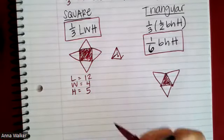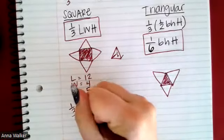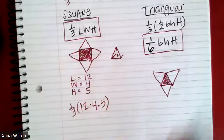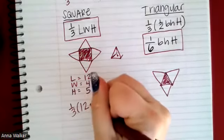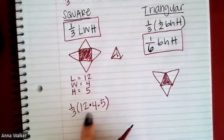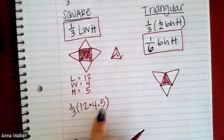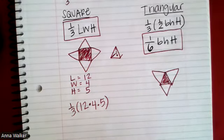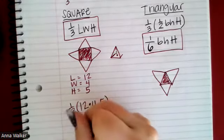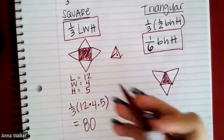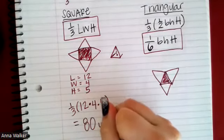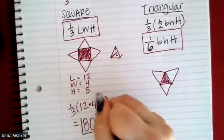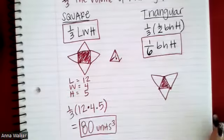So if I plug this into my formula, one third times length times width times height, I can do this a couple of different ways. I could take one third of 12 and then do times four and times five. I could do 12 times four times five and then take a third of it. Remember when we take a third of something, that's like dividing by three, but this is equivalent to 80, and I did not give you any units. So we would just say units cubed because it is volume. So that is the volume of this square base pyramid example.